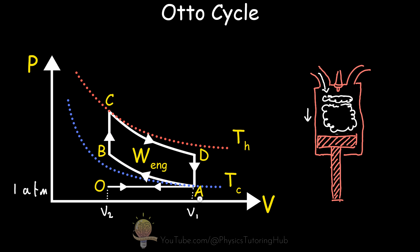Now at state A, the engine performs the compression stroke, going from state A to state B adiabatically. An adiabatic process is one where there's no heat exchange in or out of the system. The piston is compressing so fast that all the change in internal energy is caused by work from the piston and not from any heat exchange — so we don't have any heat coming in or out of the engine.